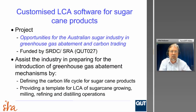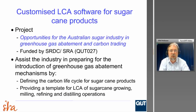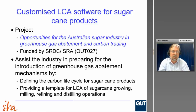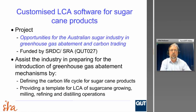The project was 'Opportunities for the Australian Sugar Industry in Greenhouse Gas Abatement and Carbon Trading,' funded by SRA. It was originally intended to assist the industry in preparing for the introduction of greenhouse gas abatement mechanisms, put together in the days post-2007 when there was an expectation that there would be a carbon trading system — so this tool would have had a lot of application there. Its use has changed somewhat over the course of the project.